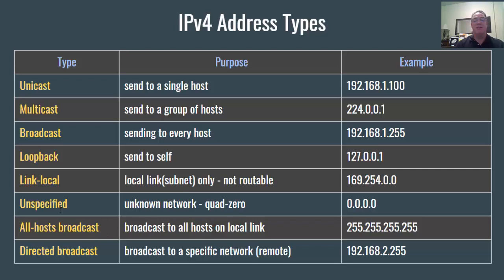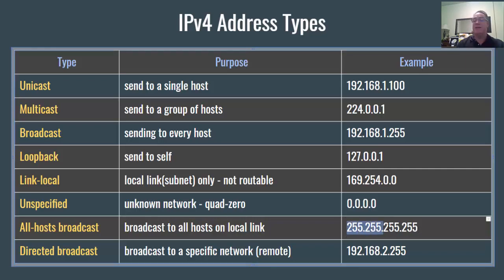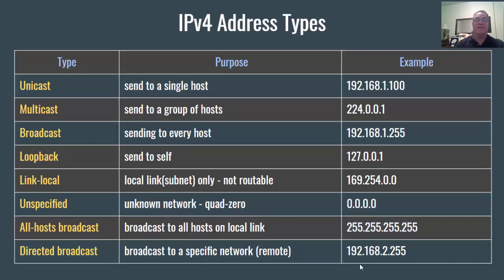The unspecified address stands for unknown networks. It's also known as quad-zero, and it's 0.0.0.0. Then you've got the all-hosts broadcast — this is broadcasting to all hosts on the local link, and it's 255.255.255.255. If you send to this address, it gets broadcasted to all hosts on the local network.